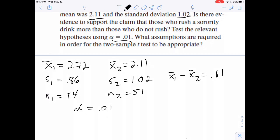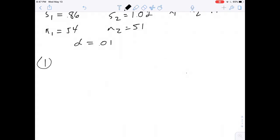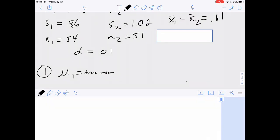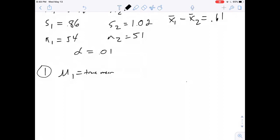Now I want to move to step 1. Step 1 of my four-step process is to identify the parameters of interest and write hypotheses. So here we really have two parameters. We have mu1 and we have mu2. So mu1 is going to be the true mean number of drinks per week consumed by women in the rush group.